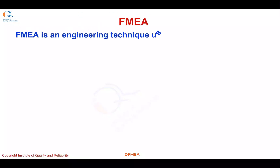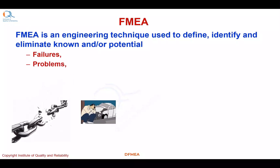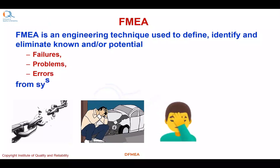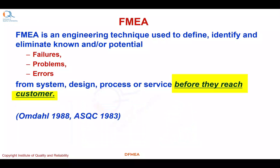Let us understand what is an FMEA. FMEA is an engineering technique used to define, identify and eliminate known and/or potential failures, problems, errors from a system, design, process or service before they reach the customer. This is as per ASQC, American Society for Quality Control, 1983.